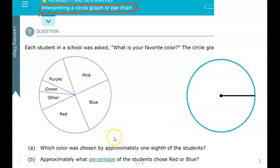Which color was chosen by approximately one-eighth of the students? Now we can draw a diameter to show one-half. So this would represent one-half, this would represent one-half. If we cut those halves in half, then we're looking at about one-fourth for each of these.